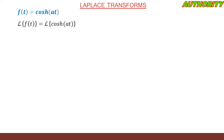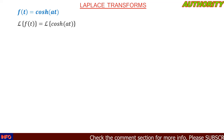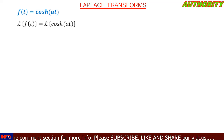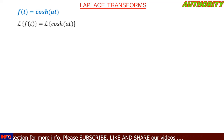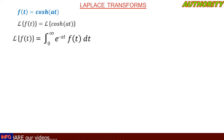We have the function f(t) = cosh(at). Note that cosh is a hyperbolic function — it is different from the regular cosine. The question asks us to evaluate or find the Laplace transform of cosh(at).